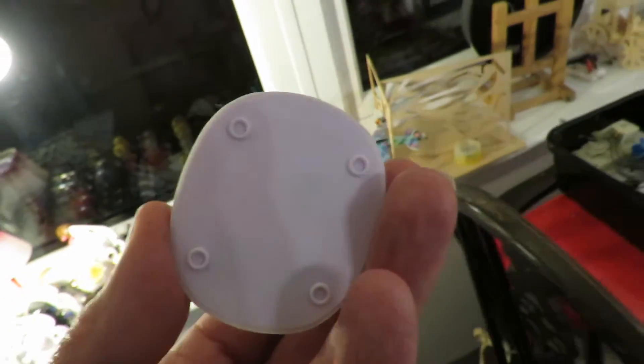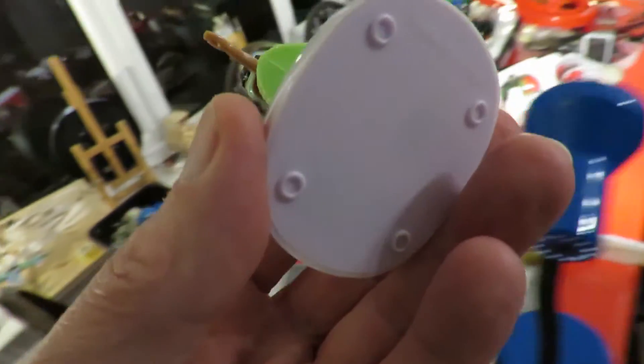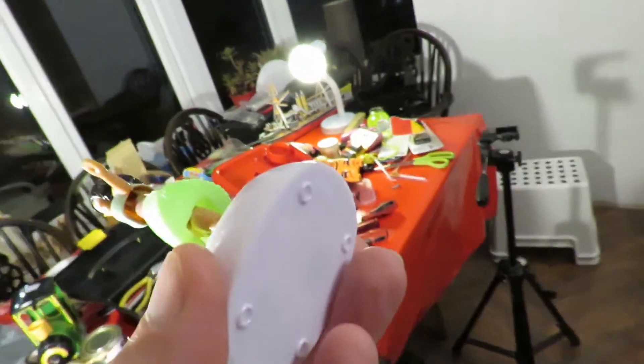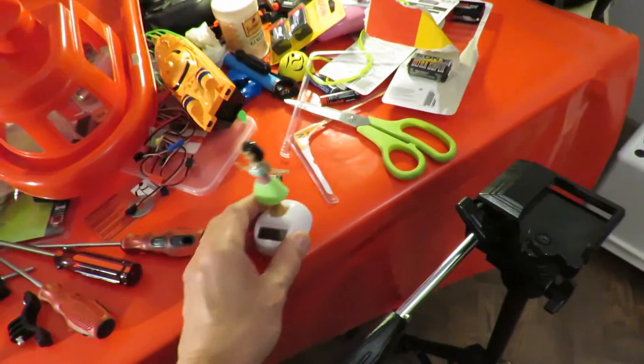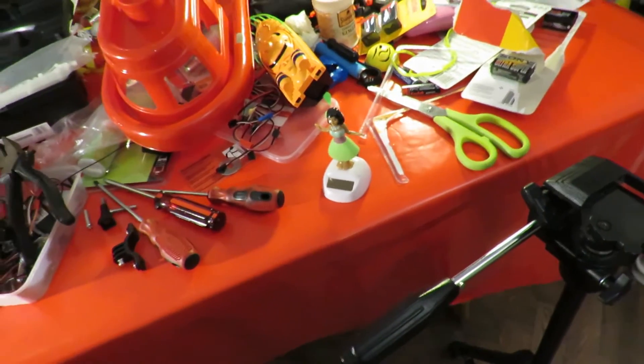Generally they're just a push fit, but I guess it's just possible that his might be one that's been glued in. I'll put the camera on the tripod, clear a little space, and we'll just pop the bottom off.